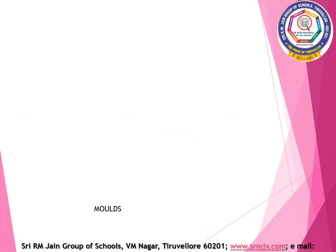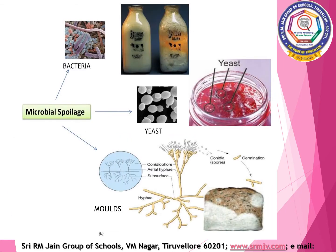Let us discuss about microbial spoilage. Bacteria are unicellular organisms and are smaller in size than yeast and mould. They are of different sizes and shapes. Bacteria can grow and develop rapidly between 20 degrees Celsius and 53 degrees Celsius.